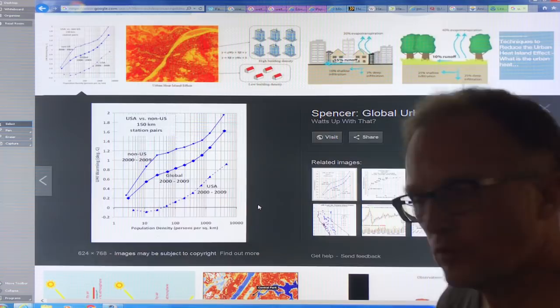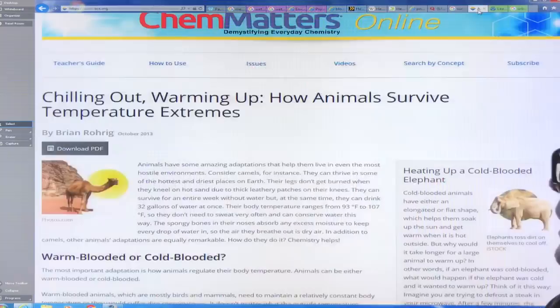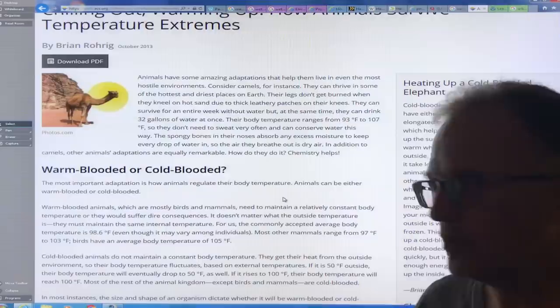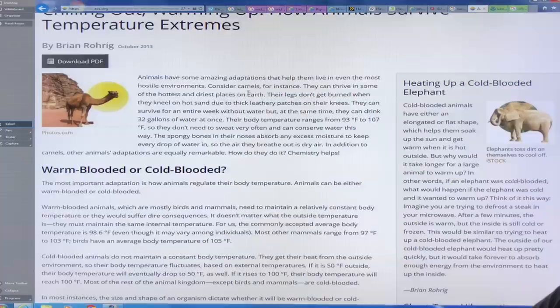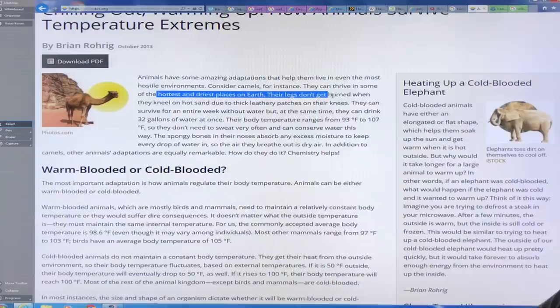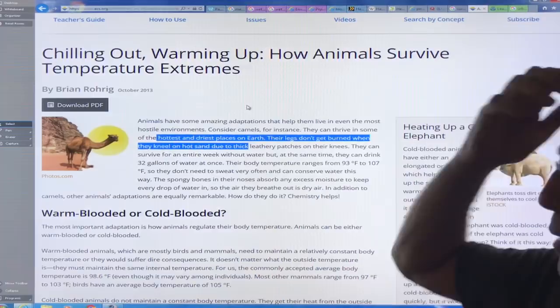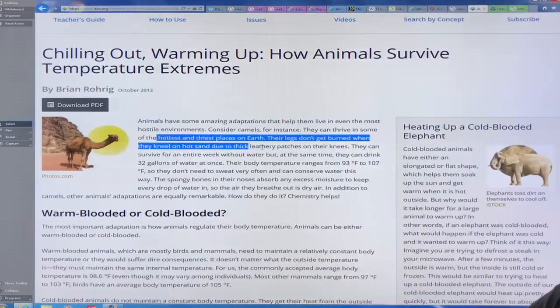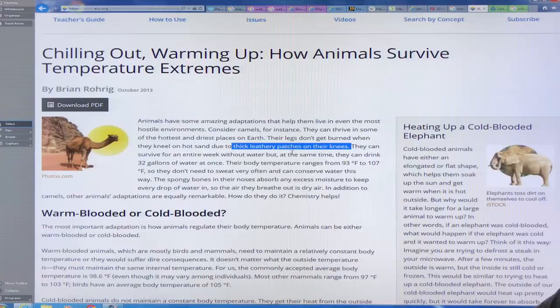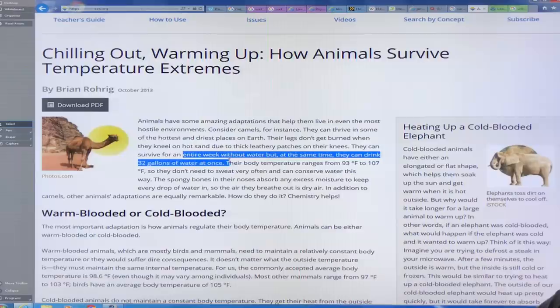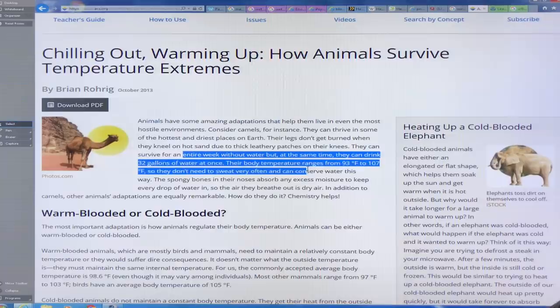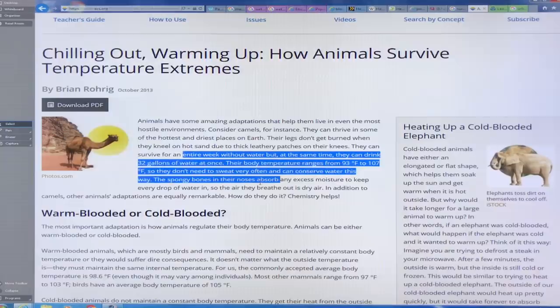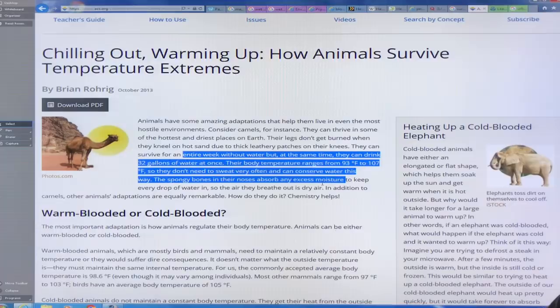So animals, they have some interesting adaptations. The biggest thing is the core body temperature. Like the camel, for example, they live in the hottest and driest places on earth, the desert. Their legs don't get burned when they kneel on hot sand. This is called chilling out, warming up, how animals survive temperature extremes. Great report on how animals are affected by the high temperatures and humidity. So they have leathery patches on their knees so they can kneel down on hot sand camels. They don't need water. They can survive for an entire week without water. But when they do drink, they can drink 32 gallons at once.